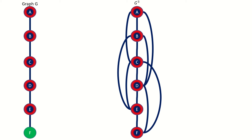Finally, vertex F had a distance of 1 to vertex E, a distance of 2 to vertex D, and a distance of 3 to vertex C in the original graph, so it will be connected to those vertices in the third power graph. However, we've already drawn in all those connections, so we don't need to do anything else. This is the finished third power of a path graph with six vertices.